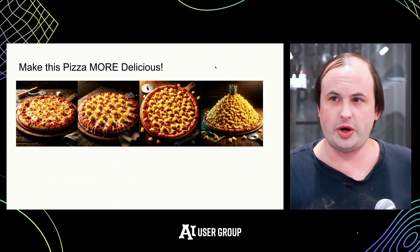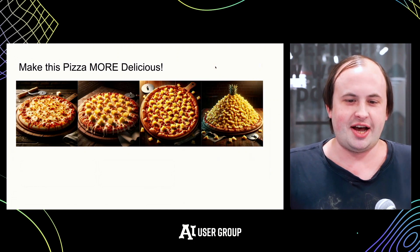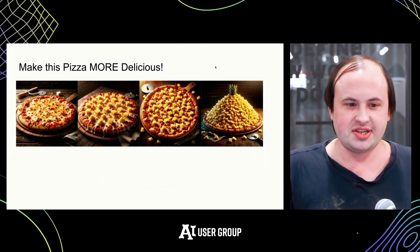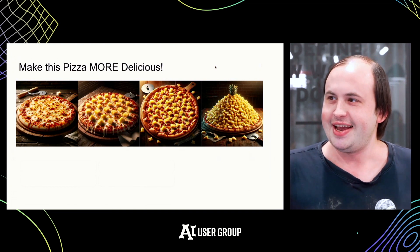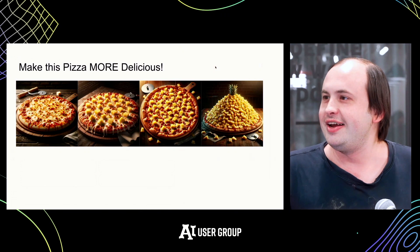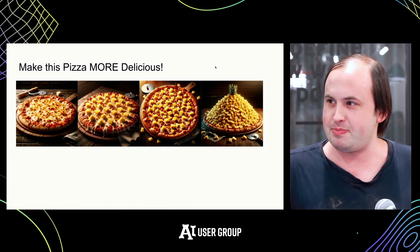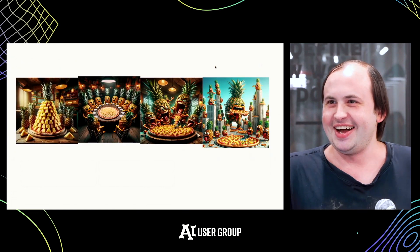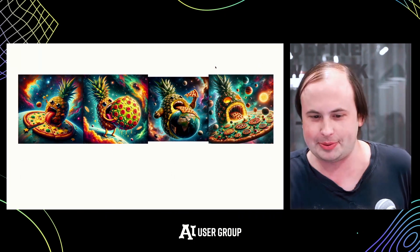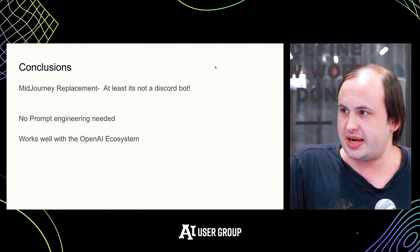I'll end with a cool Twitter trend that really takes advantage of the chatbot features. Someone started with a regular cheese pizza and progressively asked it to 'make it more delicious.' It starts fairly normal, then gets more interesting — eventually turning into anthropomorphic pineapples eating pizza, and then a galaxy eating pineapple. This isn't really something you could do in MidJourney; you could prompt 'galaxy eating pineapple' but you couldn't just say 'make my previous image more delicious' and gradually get there.